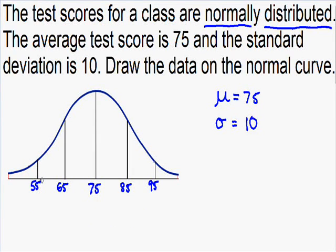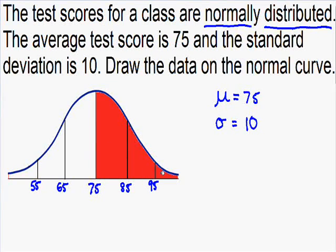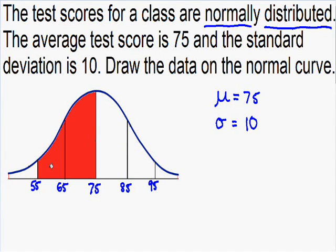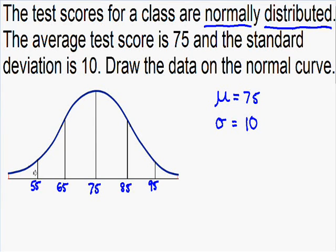Now let's look at the area underneath the curve, which gives us a lot of information. The area under the curve tells us the probability of a student's test score. Half the area is greater than the average of 75, meaning there's a 50% chance a student's score is above 75, and a 50% chance it is below 75.